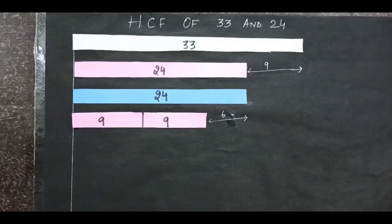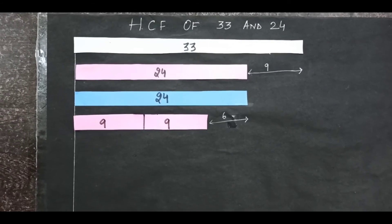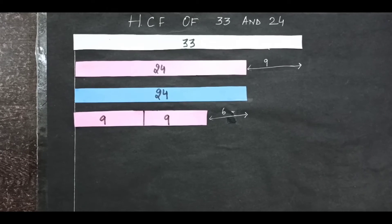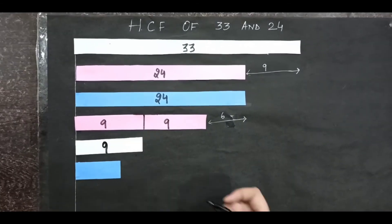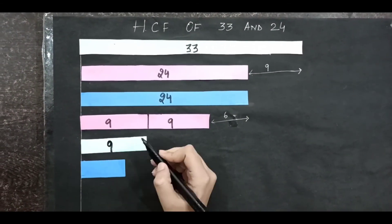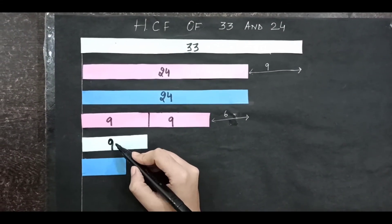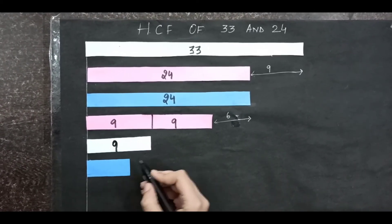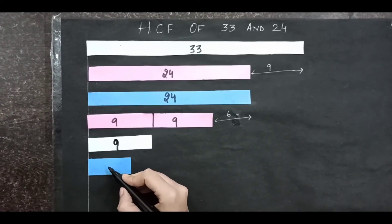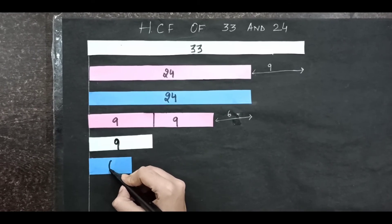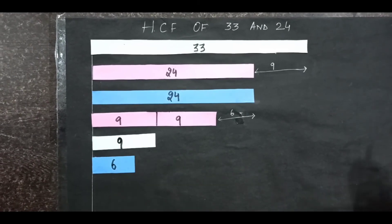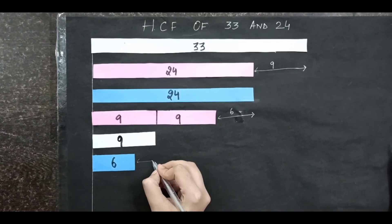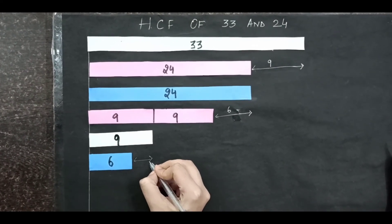In the next step we are going to cut and paste coloured strips of length 9 and 6 units. This is the coloured strip of length 9 units. Dividing 9 by 6, what we get is another coloured strip of length 6 units. This is the remaining part which is equal to 3 units.